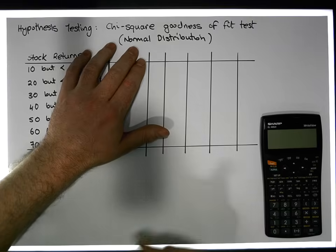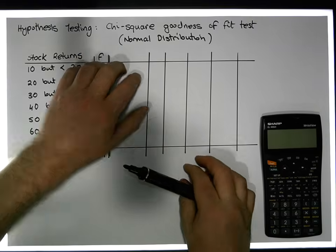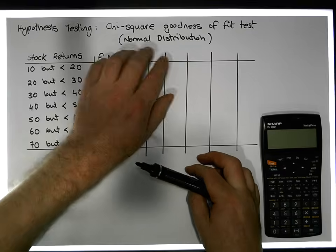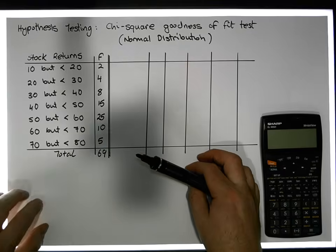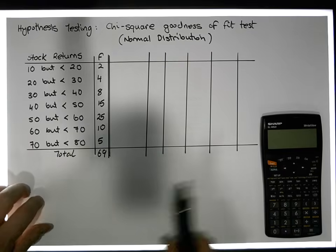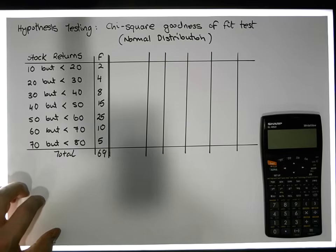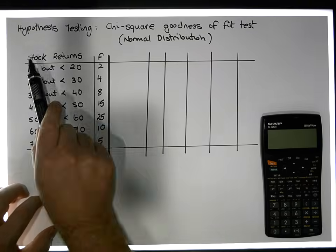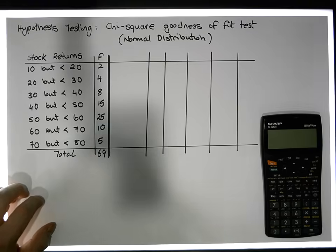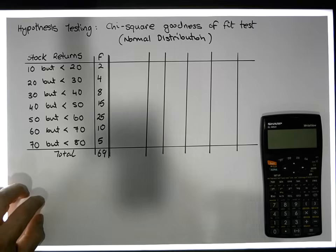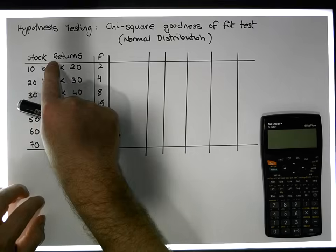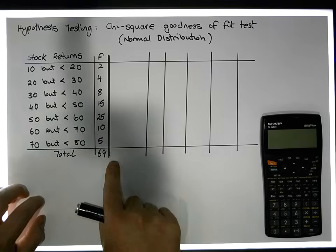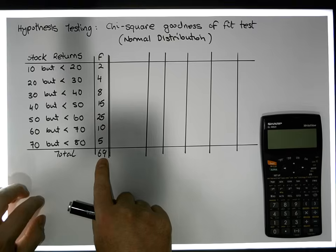When it comes to looking at our observed variable, we're going to have to take that into consideration. The example I'm looking at here is stock returns — the return observed with respect to a particular stock's closing price over a particular period of time. More importantly, there were 69 observations with respect to those returns.